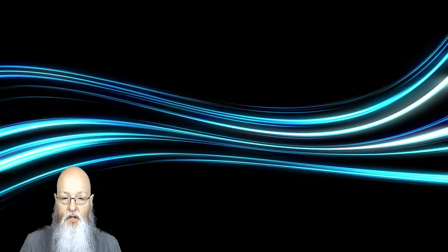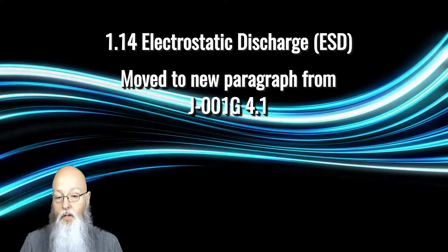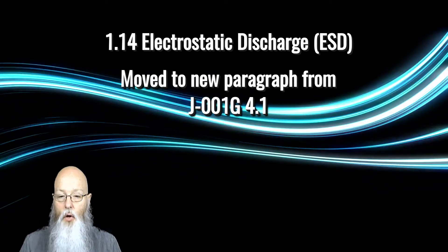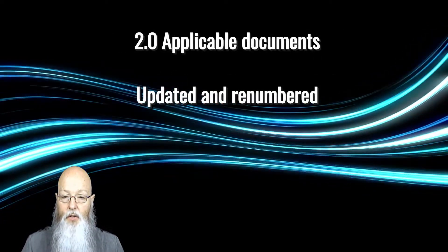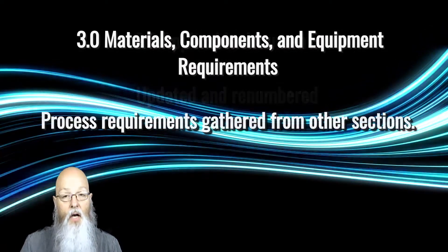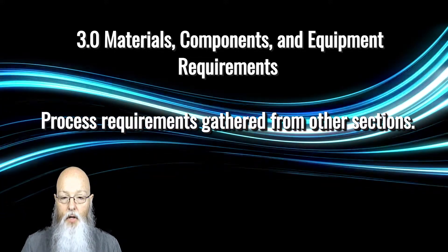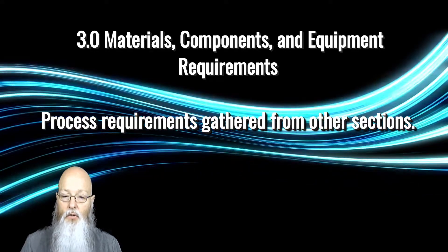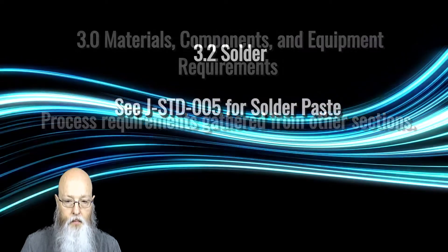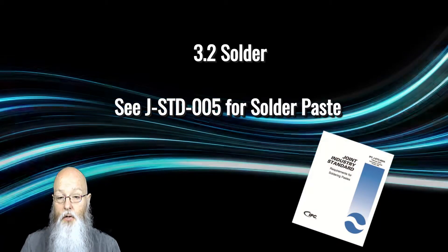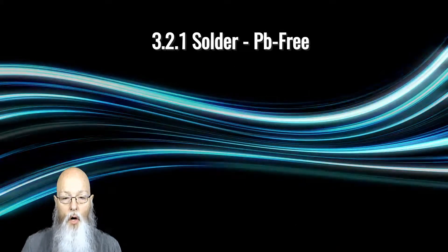Finishing out paragraph 1 of the J-STANDARD-001 is content addressing ESD. This is not new criteria — it was simply moved to the general section as it applies to all of the electronic assembly process. Paragraph 2 has renumbering and editorial changes with the addition of a few documents referenced in the criteria. Paragraph 3 had many additions in the form of process control requirements from other sections of the document. The move makes sense since the process control requirements apply to the materials and equipment used in the manufacture of the assemblies. A minor addition to 3.2 sends the user to J-STANDARD-005 for solder paste requirements.